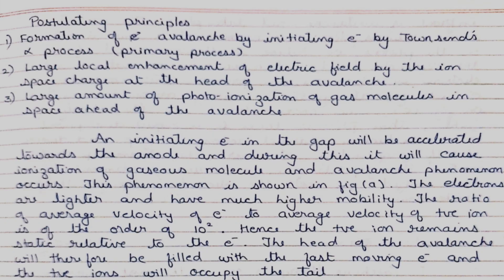Now let's look at the postulating principles of streamer's theory. First is the formation of an avalanche by an initiating electron through Townsend's alpha process, which is the primary process. Second is the large local enhancement of the electric field by the ion space charge at the head of the avalanche. Third is the large amount of photo-ionization of gas molecules in the space ahead of the avalanche.